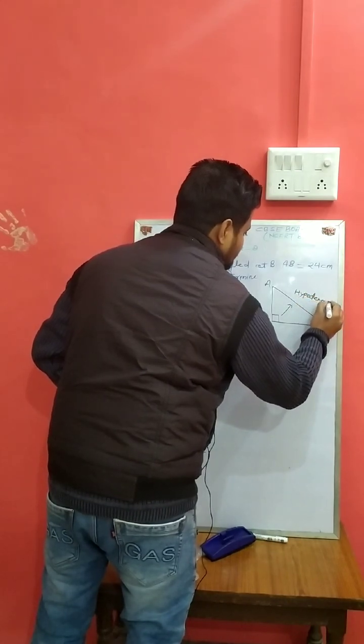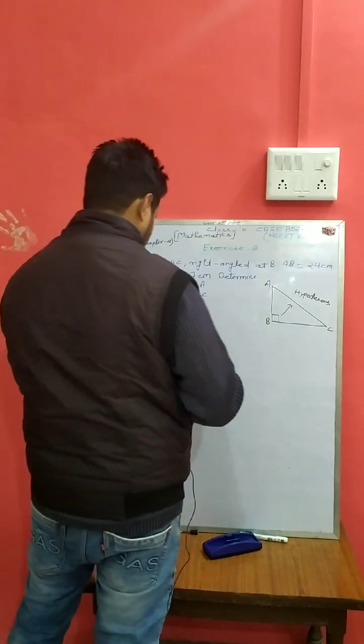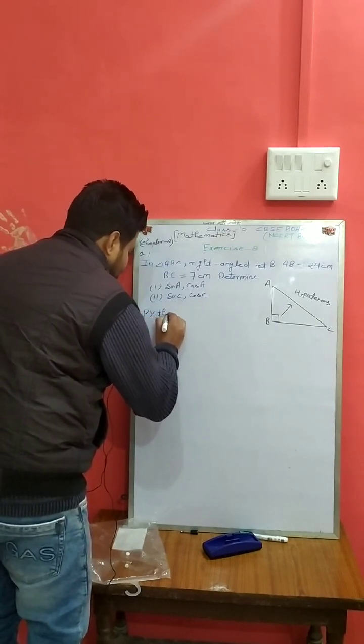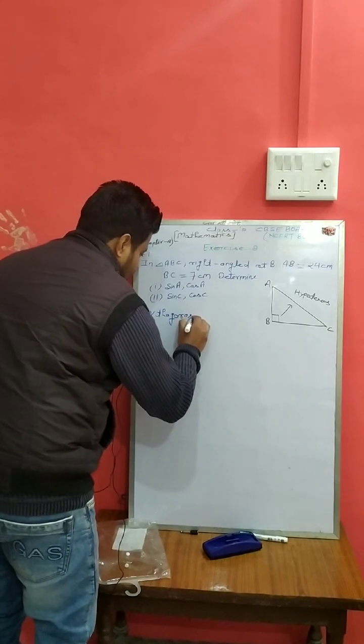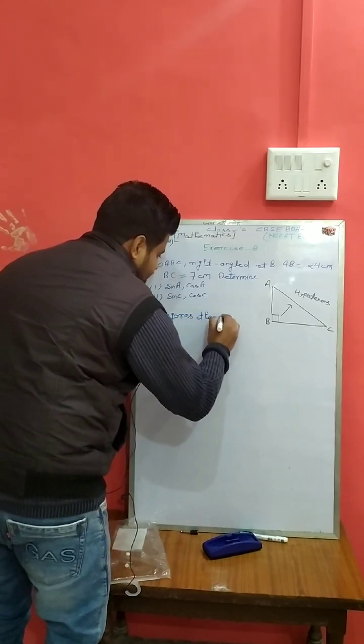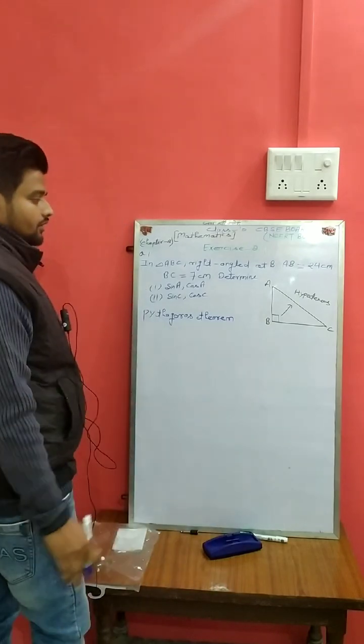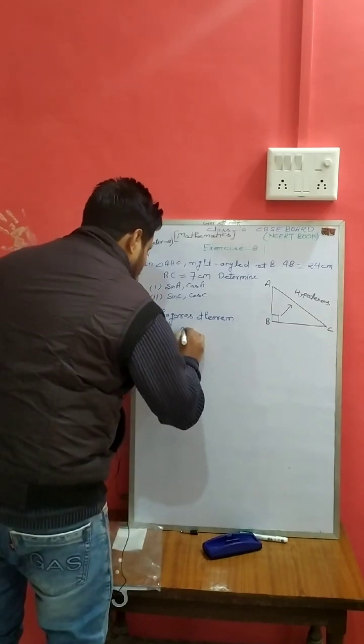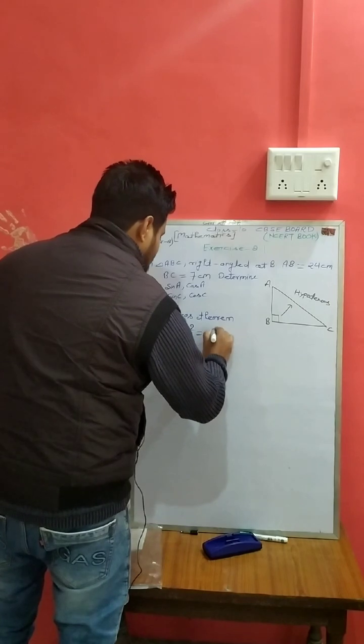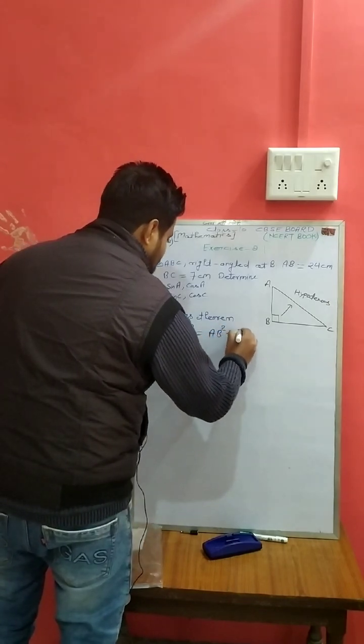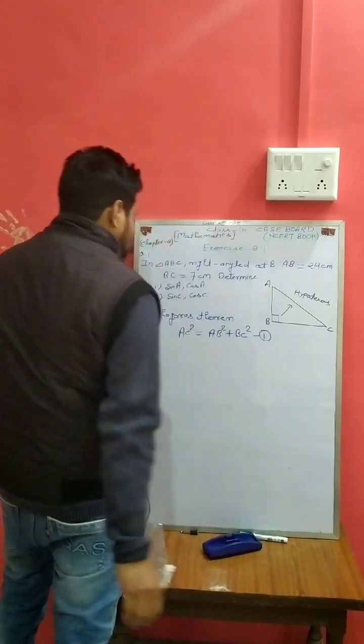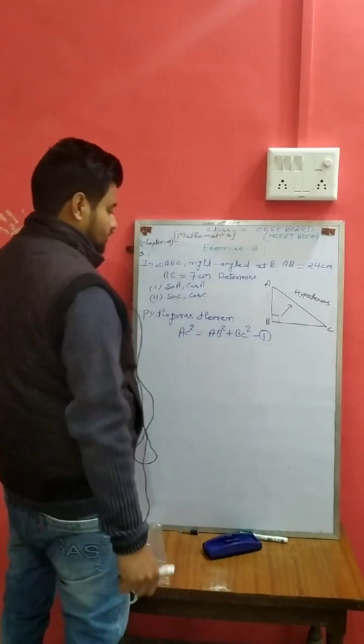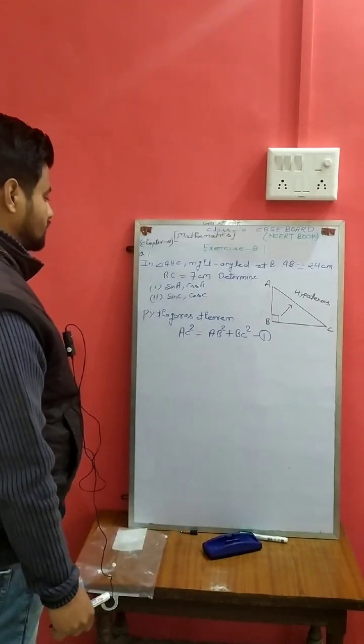And we already know that hypotenuse square equals the sum of the square of the other two sides. Hypotenuse square equals sum of square of other two sides. This theorem is very helpful in this question.